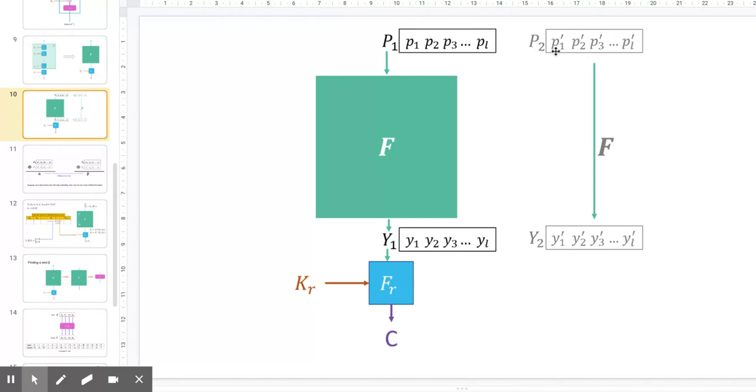P1 and P2 are plain text of L bits each. They pass to the F block and produce an intermediate text Y1 and Y2, both of L bits. Y1 and Y2 serve as inputs to Fr block which takes in a round key Kr and produces corresponding ciphertext C1 and C2.